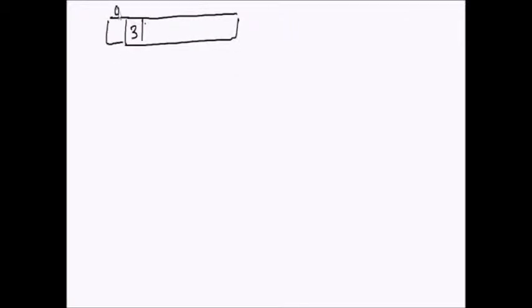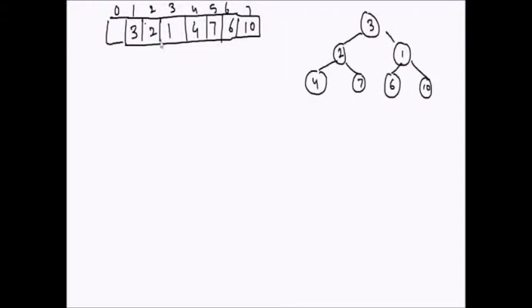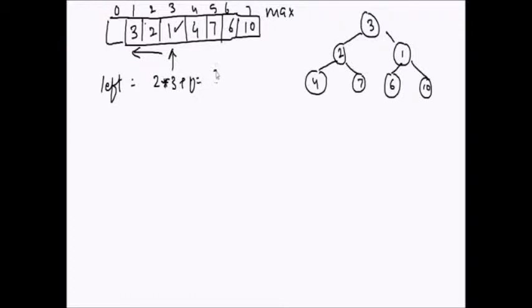Let's see how we can build a heap from the input array. I'm using a one-based index, so the elements are at positions one through seven. If we build a raw heap out of this, we take the middle index of the array, which is three, and process elements from the upper half. At index one, we are making a max heap, so we check the right child at index seven and left child at index six.